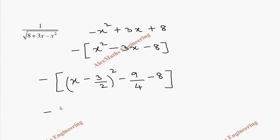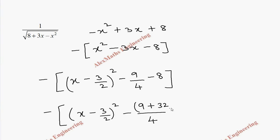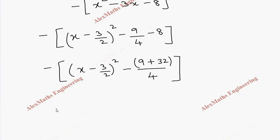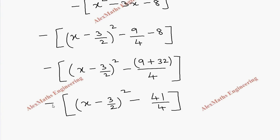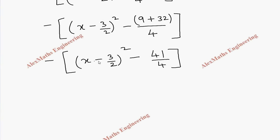There is a minus sign outside, and inside we have (x − 3/2)². Taking LCM of 4: −9 − 32 combined with common minus sign gives minus(−9/4 − 8), so we have −(x − 3/2)² minus (−41/4). Taking the minus sign inside, the positive term comes first, giving 41/4 − (x − 3/2)².